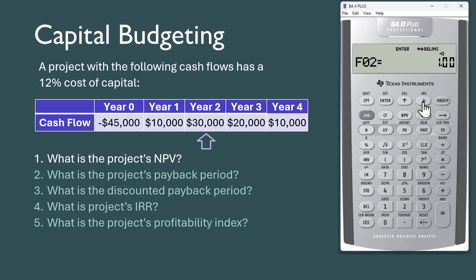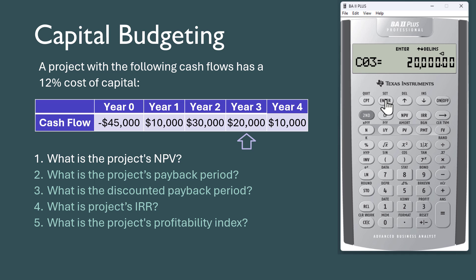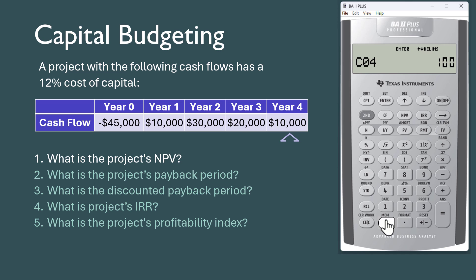FO2 is 1 — scroll down. CO3 is 20,000 — press Enter and scroll down. FO3 is 1 — scroll down. And lastly, CO4 is 10,000 — press Enter.